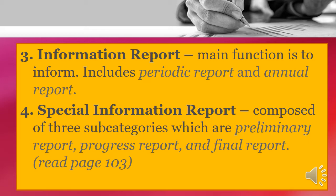A periodic report is a type of information report written by employees or subordinates, submitted daily, weekly, or monthly to their superiors, to note information of interest to the organization and show comparisons and tendencies. An annual report is a type of information report which includes the listing of activities, projects, and events of an organization during the whole year to show progress, financial status, and general state of affairs. This report can be classified as public or private.